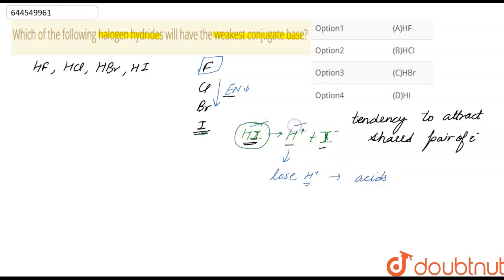that means HI is highly acidic as compared to HBr, HCl, and HF.